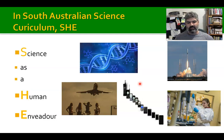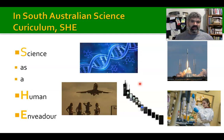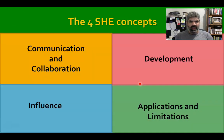The science that is able to progress the most is the one getting the most influence from politicians, the public, and scientific journalists. Your assignment is going to be all about that interplay — how science and society interact. There are four main SHE concepts.